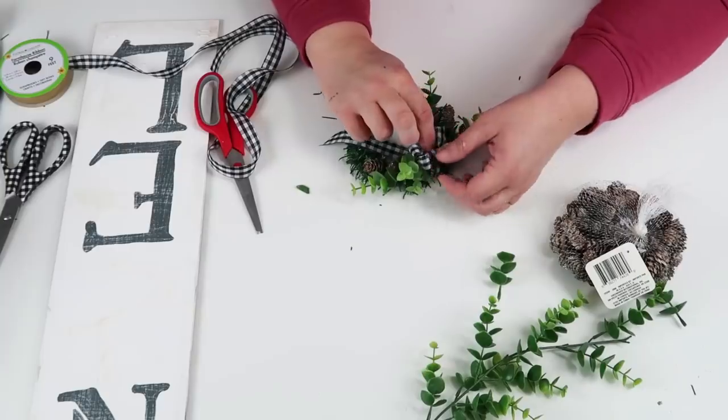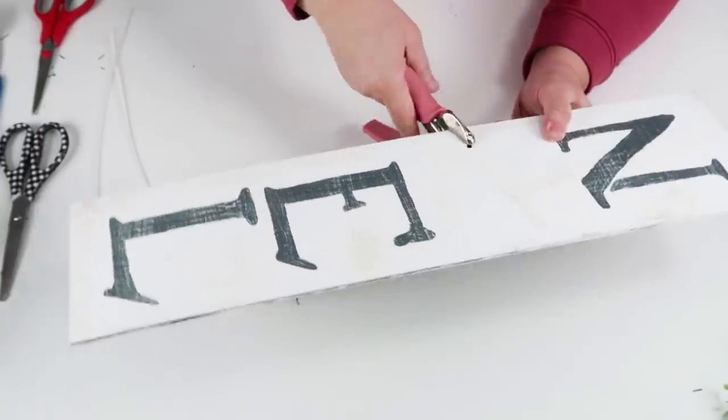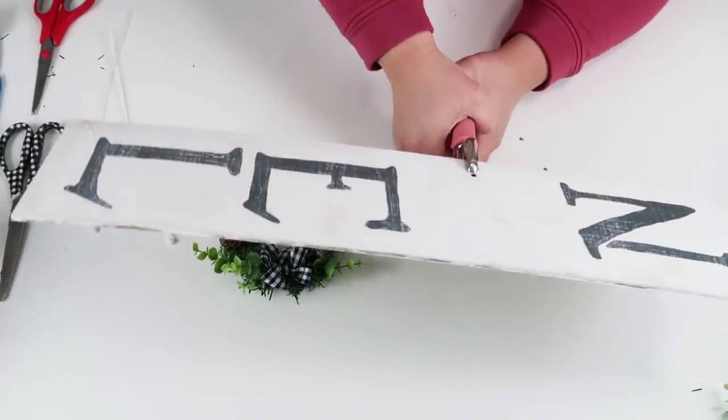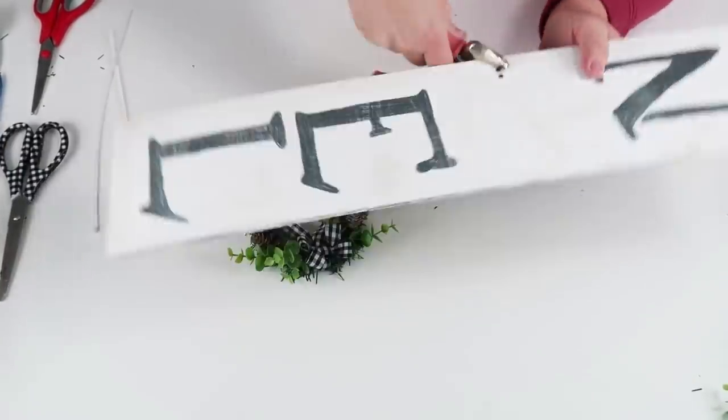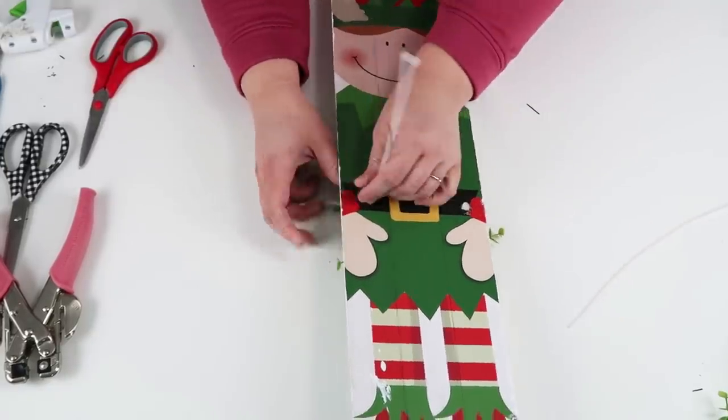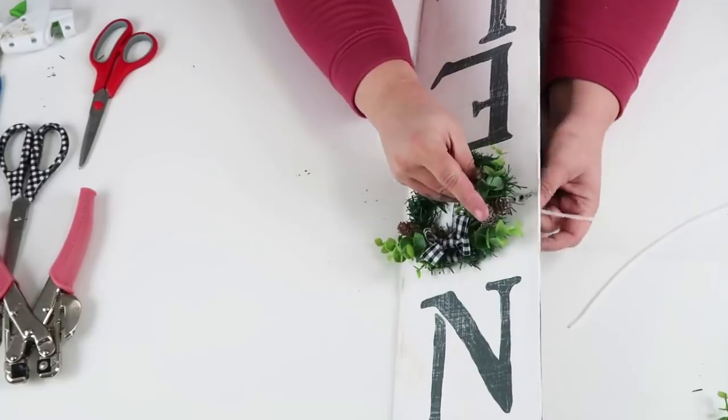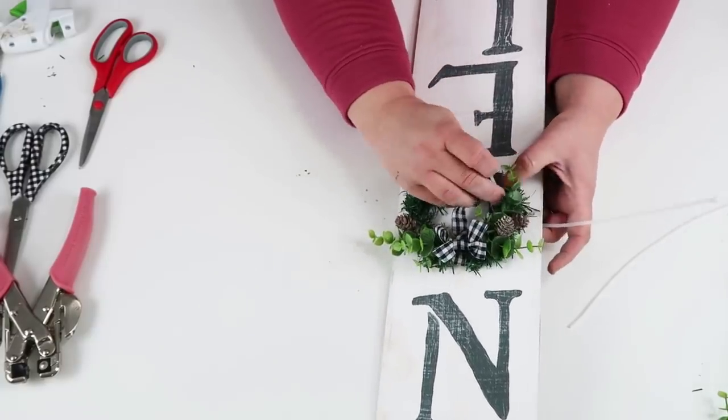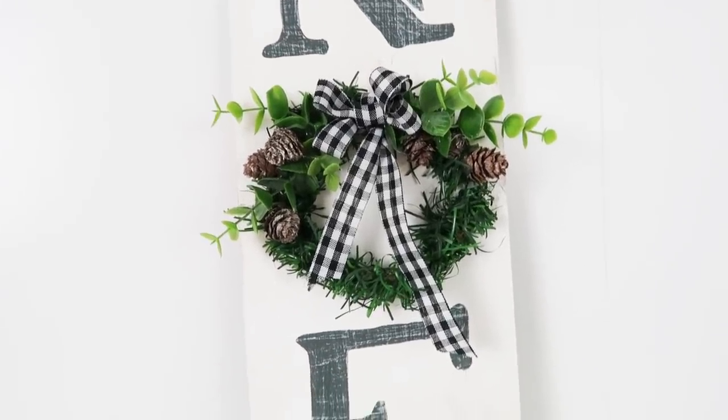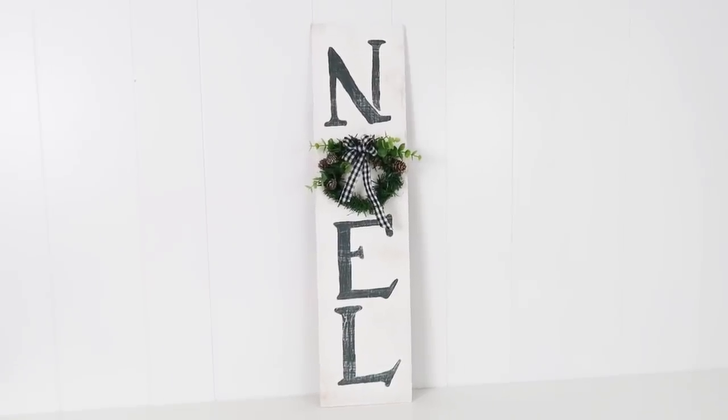Then I added on a buffalo check ribbon with some pine cones. Now this is one of the reasons why I love this Crop-A-Dile tool—because I can punch right through this sign without any issues, so I can zip tie the wreath right on to the sign. That way you don't have to worry about it falling off or dealing with hot glue. It's just going to stay on there not having any issues. I just went through the back, brought it up and around the wreath, back down through the hole, and then pulled it nice and tight. It's ready to display somewhere in your home.